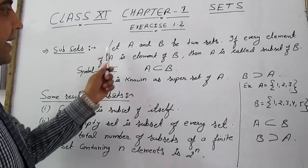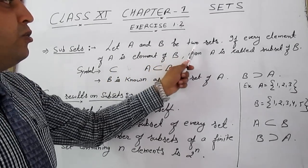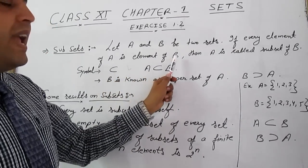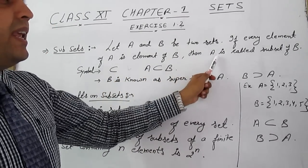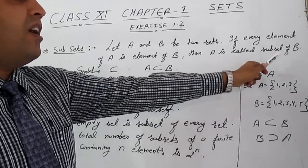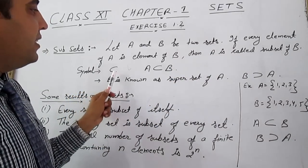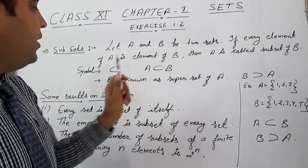Subsets. Let A and B be two sets. If every element of A is element of B, then A is called subset of B. And the symbol of this subset is like this: A is subset of B.